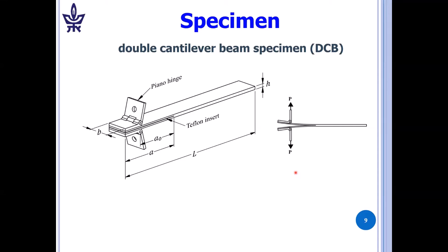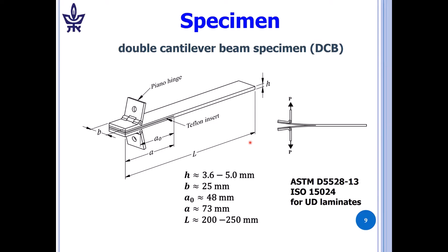The specimens that we're considering are double cantilever beam specimens. H is the height of the specimen. For the thinner specimens with 15 plies, the first material system, the prepreg, H is approximately 3.6 millimeters thick. For the material system two, it's five millimeters thick. Then we have the width, the initial crack length and delamination length measured from the piano hinge. A is the length measured from the edge and L is the entire length of the specimen. We followed ASTM and ISO standards. They are for UD laminates, so we use them as a guide. Of course, things are somewhat different because these specimens are made of mainly woven plies.